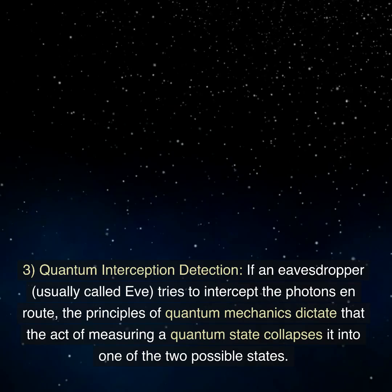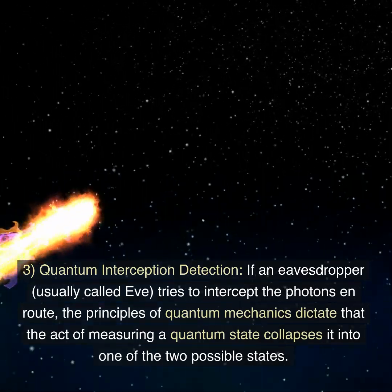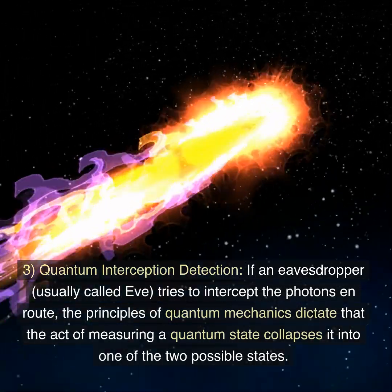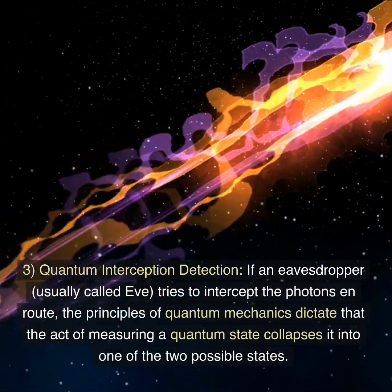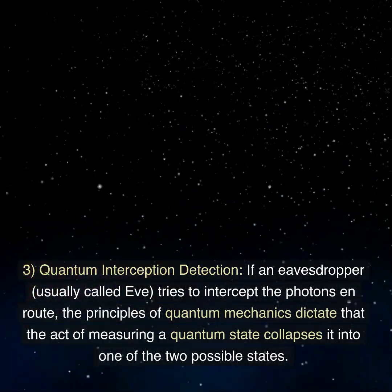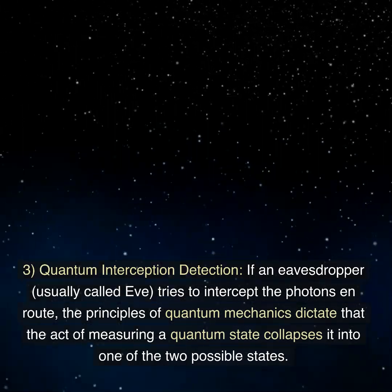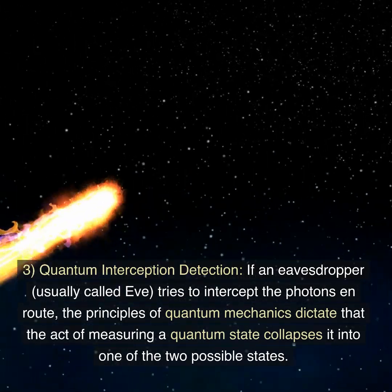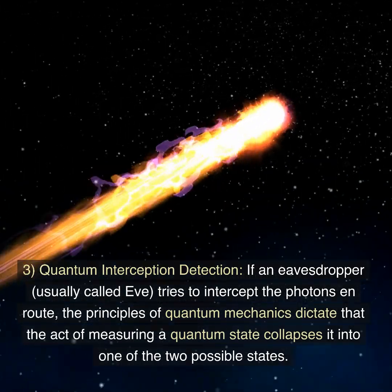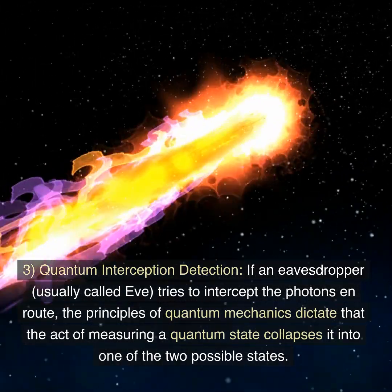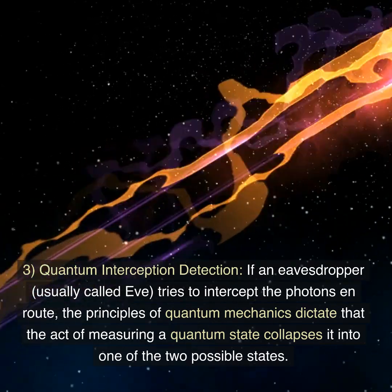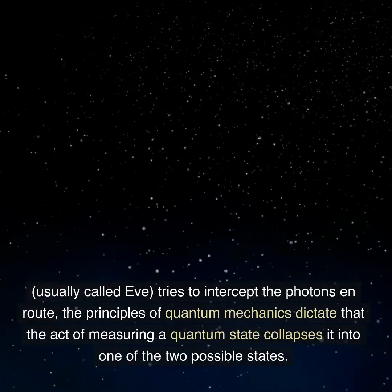She then sends these photons to Bob. Step three: quantum interception detection. If an eavesdropper, usually called Eve, tries to intercept the photons en route, the principles of quantum mechanics dictate that the act of measuring a quantum state collapses it into one of the two possible states.